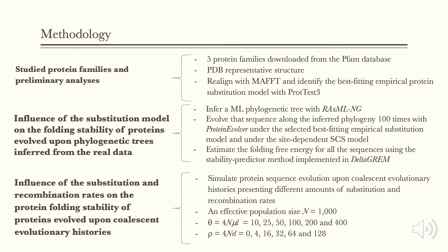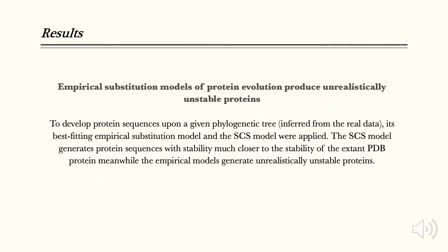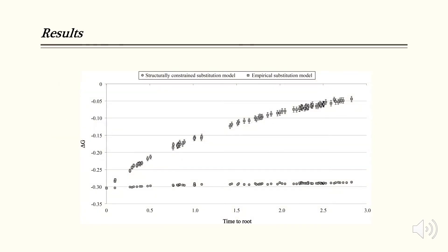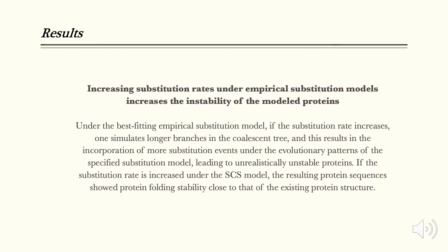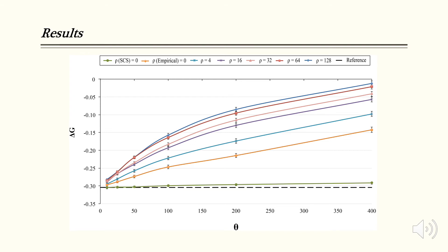The results are exposed in three important points. The best-fitting empirical substitution model generated unrealistically unstable proteins, meanwhile the SCS model generates protein sequences with stability much closer to the stability of the extant PDB protein. Under the most appropriate empirical substitution model, the increase in the substitution rate in the evolution of protein sequences again generated unrealistically unstable proteins. The SCS model again showed protein folding stability close to that of the reference protein structure.